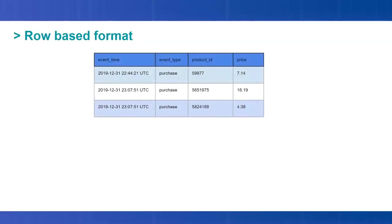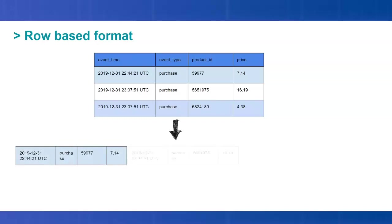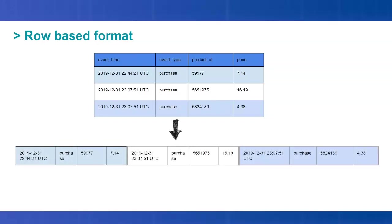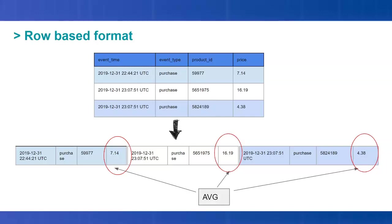Let's look at the row-based format. We have some example data with different types of events, a product ID column and a price column. The data is stored sequentially next to each other. If we would like to make some calculation or analytics — for example a SQL statement on the price column — the whole dataset needs to be scanned in order to extract those values to compute, for example, an average.